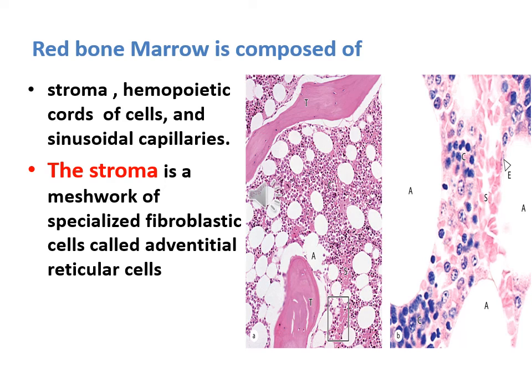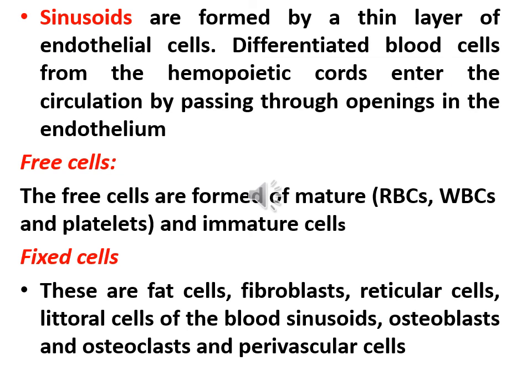The stroma is a meshwork of specialized fibroblastic cells called adventitial reticular cells. Sinusoids are formed by a thin layer of endothelial cells. Differentiated blood cells formed from the hematopoietic cords enter the circulation by passing through openings in the endothelium. The free cells consist of mature and immature cells.